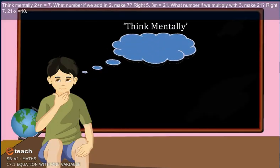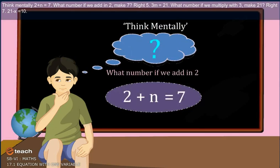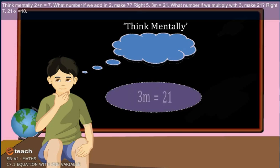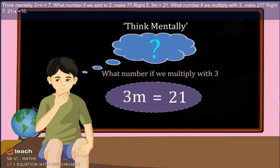Think mentally: 2 plus n is equal to 7. What number if we add to 2, it makes 7? Right, 5. Now, 3m is equal to 21. What number if we multiply with 3, make 21? Right, 7.